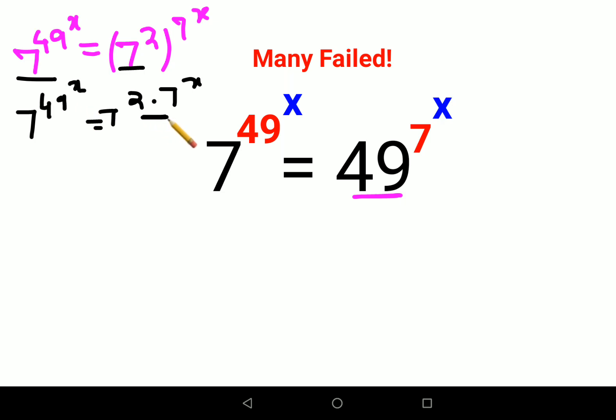Now why have I done this? Because there is a law in indices: a raised to m, the whole raised to n, is nothing but a raised to product of m and n. So now like I said, we can directly equate both of these because the bases are same.